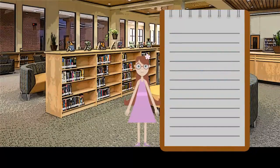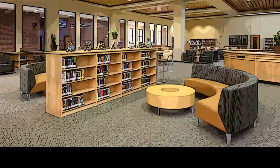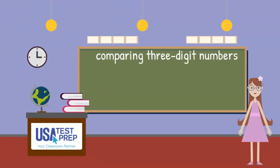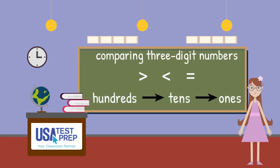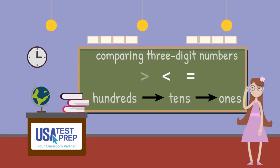Wow, that is a lot of fun. Let's head back to the classroom. I had a great time learning about comparing numbers with you today. Remember that a three-digit number can be greater than, less than, or equal to the ones you are comparing. Always start with the hundreds digit and work your way to the ones. See you next time.